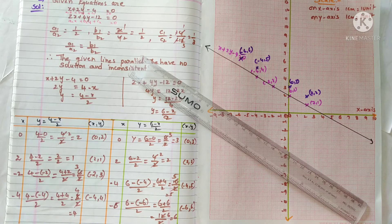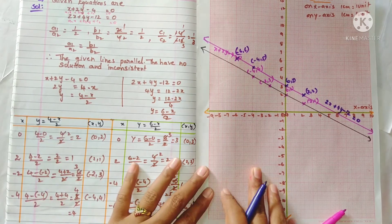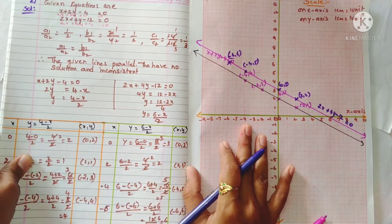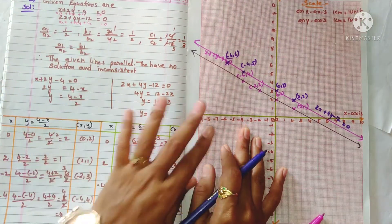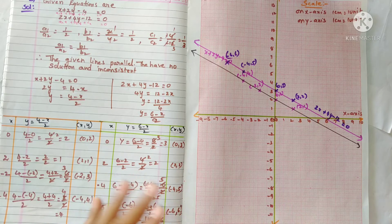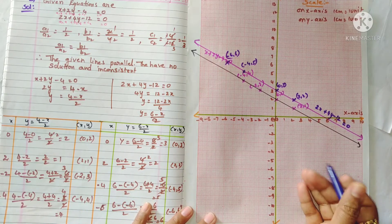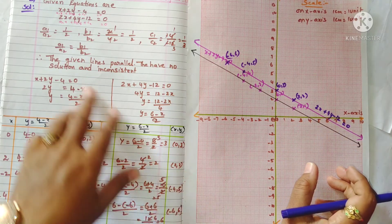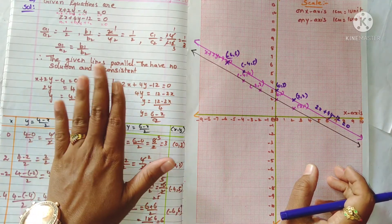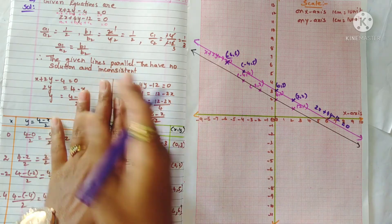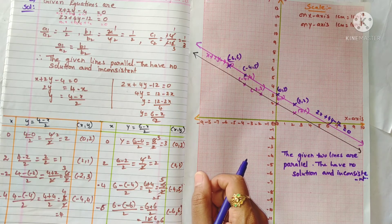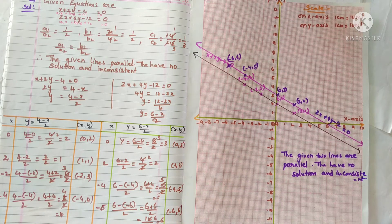Write the second equation on its line. This is the representation of the two lines on the graph. As asked in the question, write the comment: these two lines are parallel, they have no solution, and are inconsistent. Students, please like this video, share with your friends, and please subscribe to my channel. Thank you for watching.